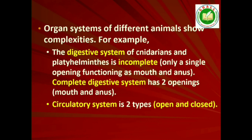Organ systems in different groups of animals exhibit various patterns of complexities. For example, the digestive system in Platyhelminthes has only a single opening to the outside of the body that serves as both mouth and anus, and is hence called incomplete. A complete digestive system has two openings, mouth and anus. Similarly, the circulatory system may be of two types: open type, in which the blood is pumped out of the heart and the cells and tissues are directly bathed in it; and closed type, in which the blood is circulated through a series of vessels of varying diameters — arteries, veins and capillaries.